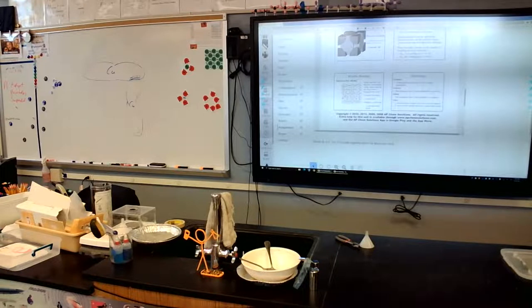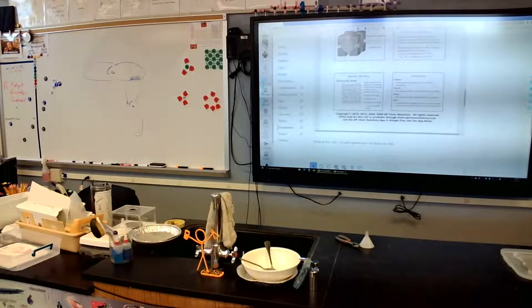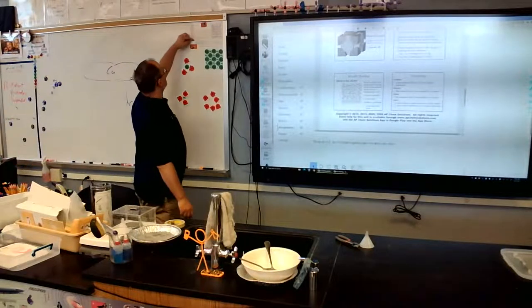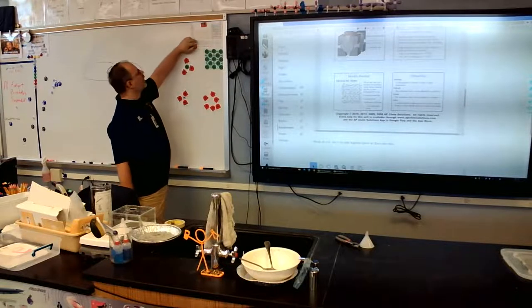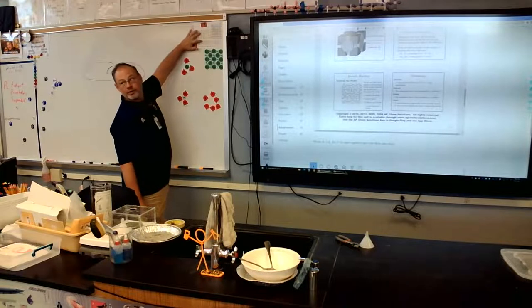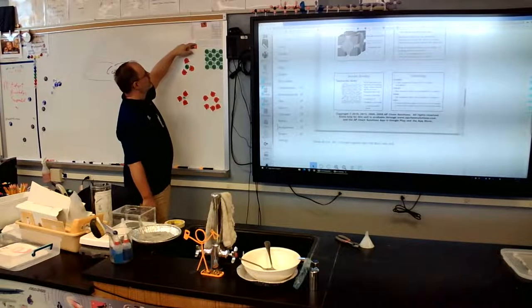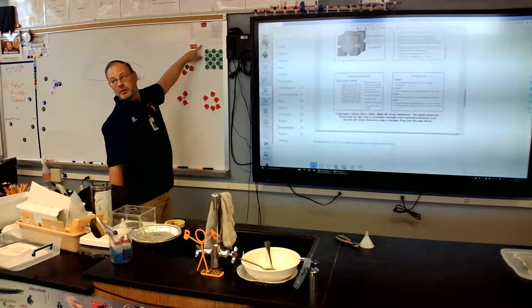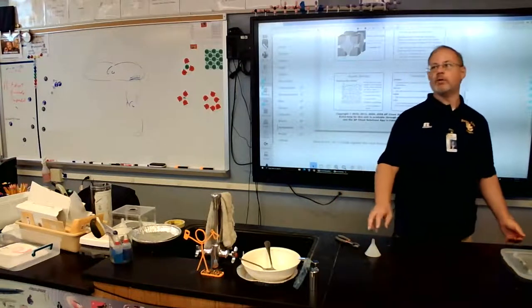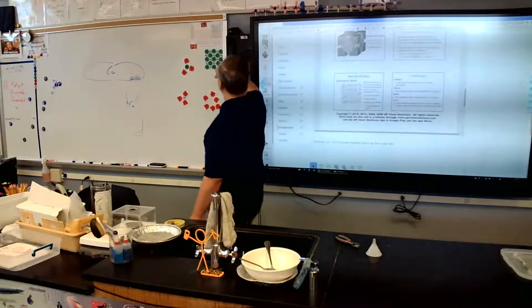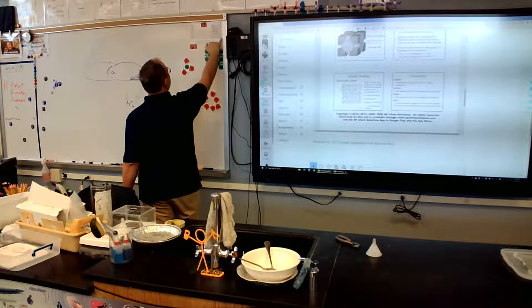The f-block consists of the lanthanides and actinides. All lanthanides except promethium occur naturally. The two artificial elements that could theoretically exist naturally are technetium and promethium. Uranium is the heaviest naturally occurring element. Everything after uranium is called transuranium — made in a lab. All elements from lawrencium onward through oganesson are also artificial.